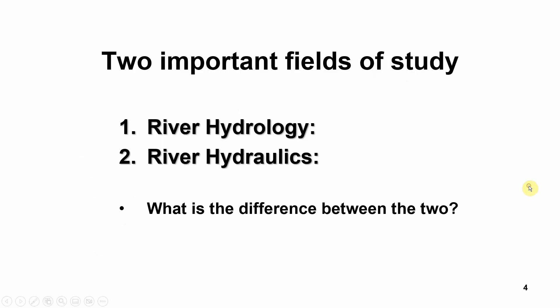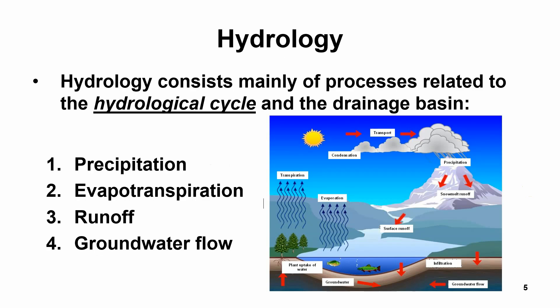One thing which is important to differentiate is the difference between hydrology and river hydraulics. Hydrology is all about the hydrological cycle — the movement of water from the atmosphere to the ground. It includes precipitation, water loss through evapotranspiration, river discharge (also called runoff), groundwater flow, and so on, as outlined in this figure.